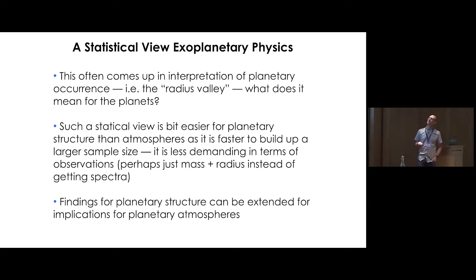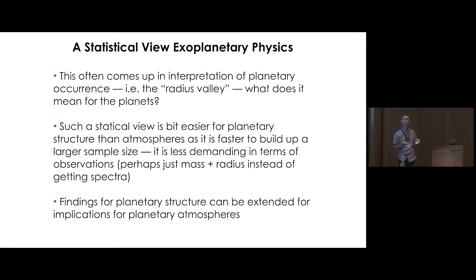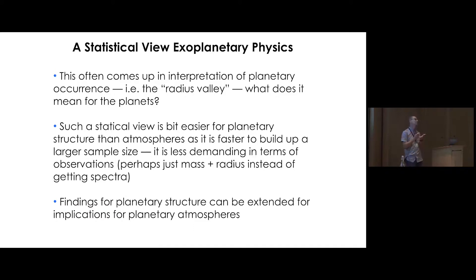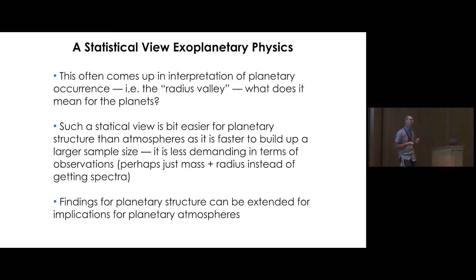This statistical view is typically a bit easier when thinking about planetary structure rather than planetary atmospheres, because for planetary structure it's less demanding — you might only need to measure a planet's mass and radius to learn something about its density. You might have dozens or hundreds of objects where you know the densities, whereas for planetary atmospheres you want to get spectra, which is a lot more time-consuming. We'll certainly get there.